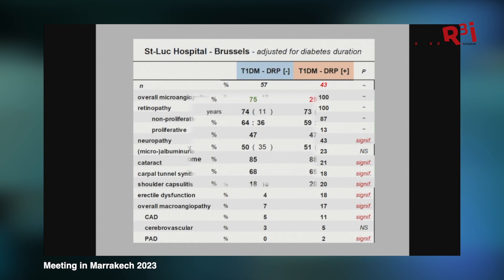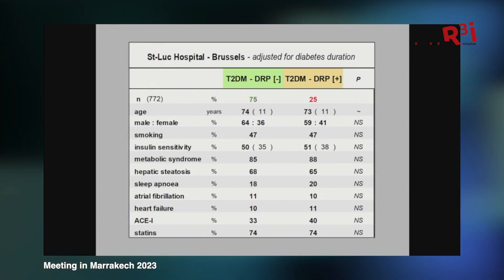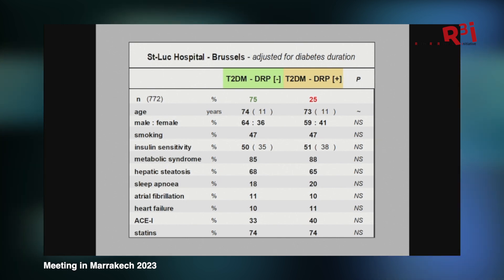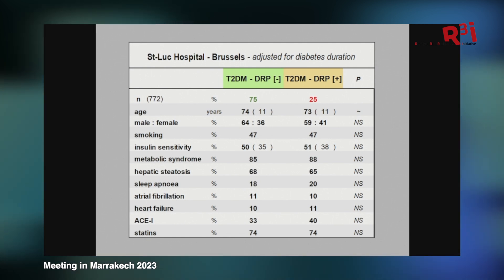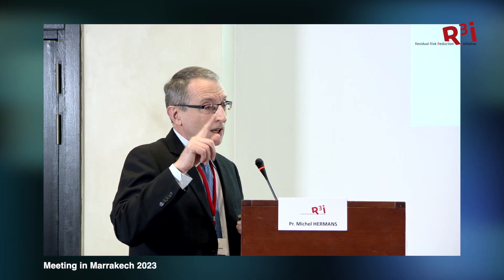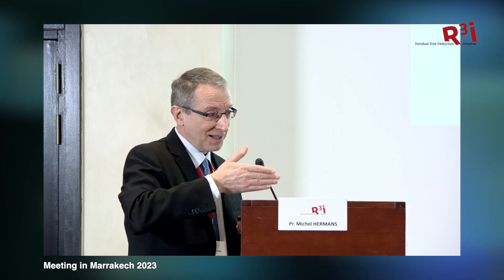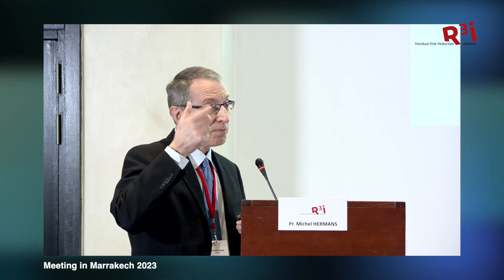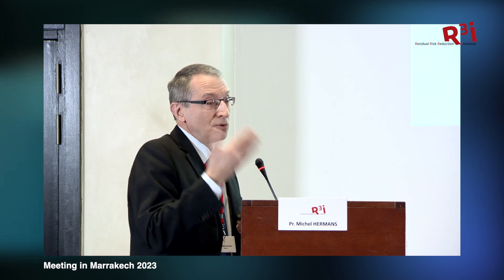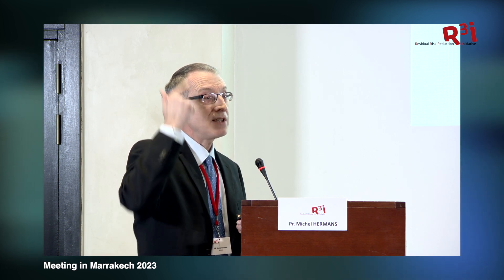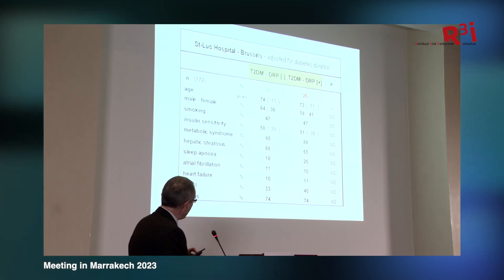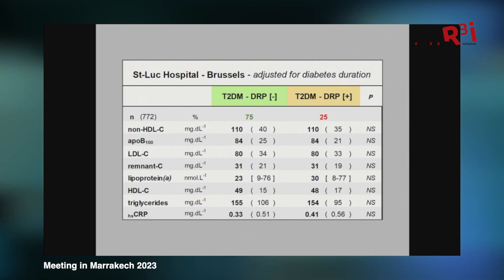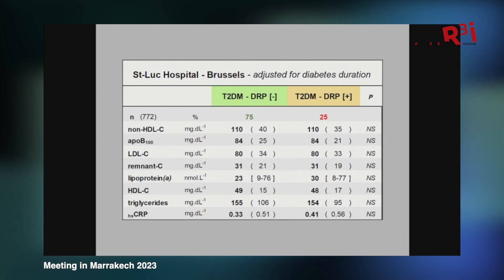What about type 2? Again, it's a case-control adjusted for diabetes duration, which erases the effect of age and gender. Nothing — it's very different from type 1 diabetes. Metabolic syndrome is not different. I looked at hepatic steatosis because of very puzzling data: if you have a fatty liver, you have much less retinopathy in cross-section. But if you adjust for atherogenic dyslipidemia, it's the atherogenic dyslipidemia which drives the risk for retinopathy, not the fatty liver. And drugs that improve fatty liver that we use massively, such as GLP-1 receptor agonists, tend to raise the risk of retinopathy — so there is something that needs to be addressed there.